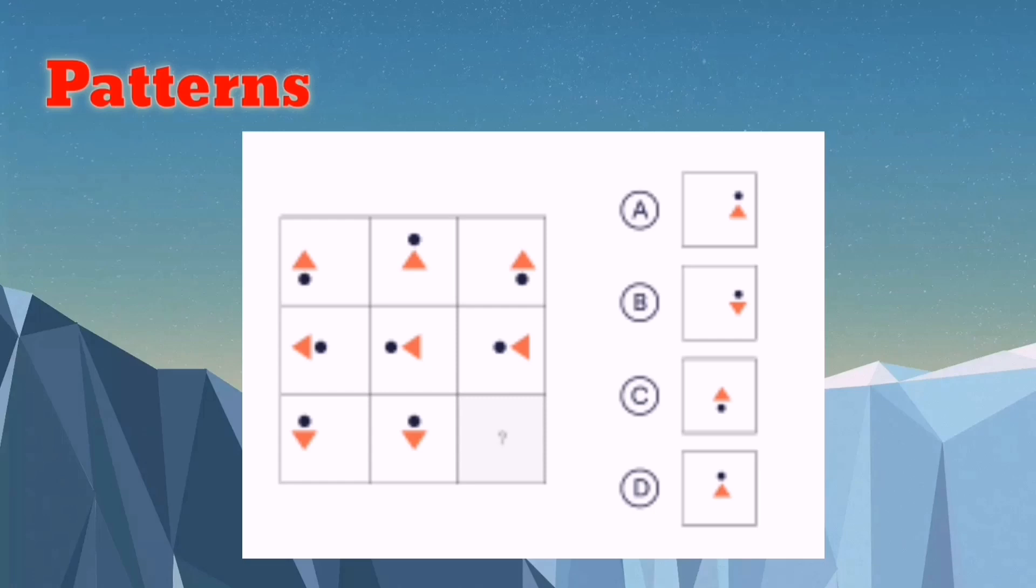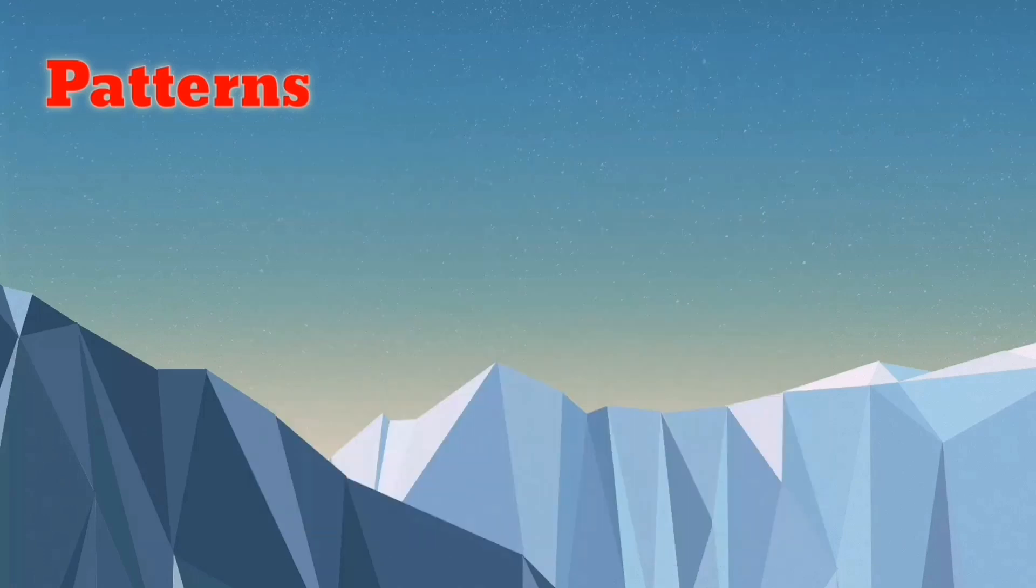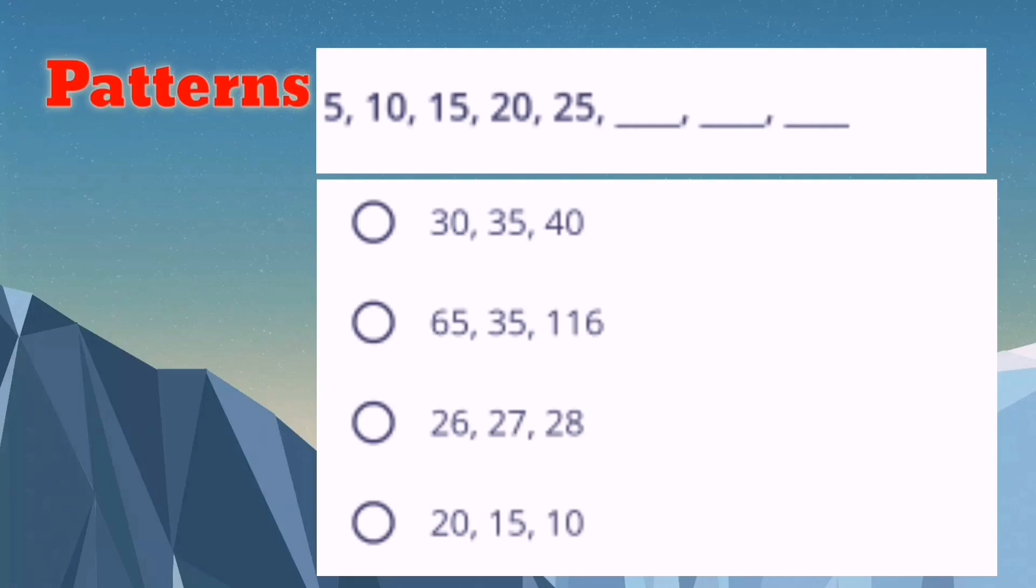Next is this one. What are the three terms? Observe the pattern: 20, 20, 25. If your answer is 30, 35, and 40, then you are correct.